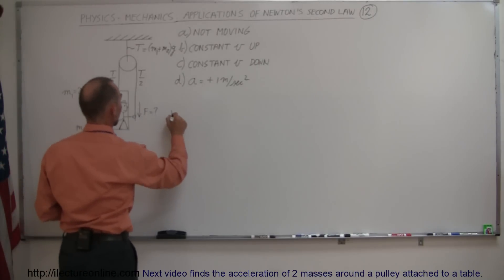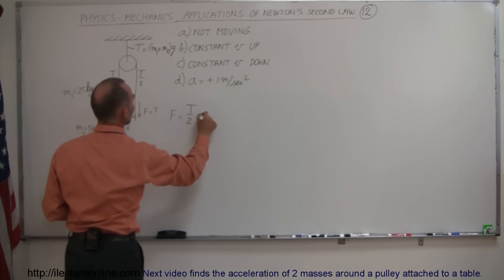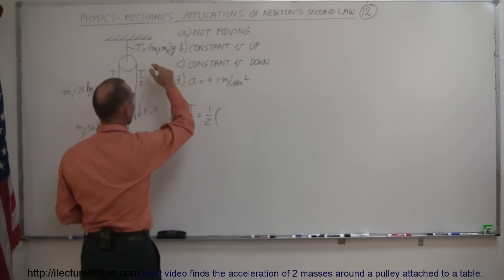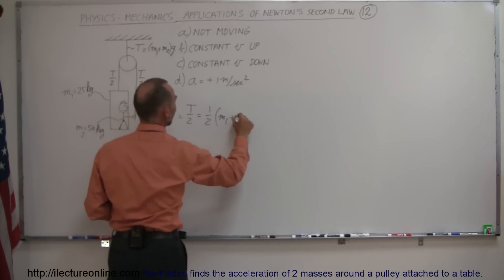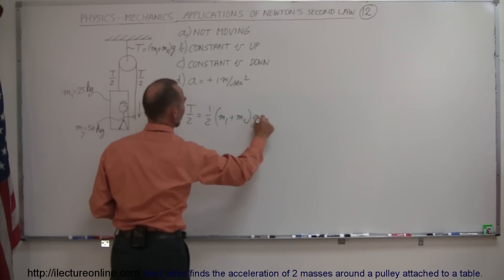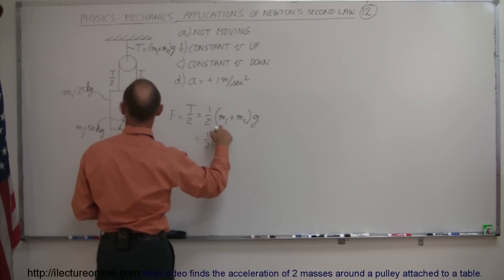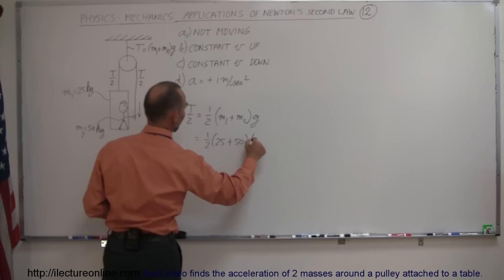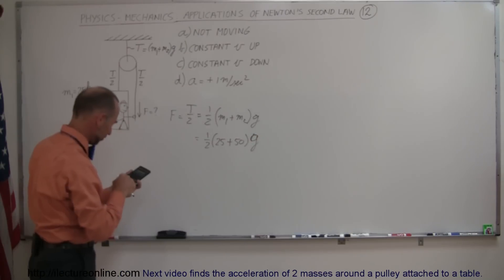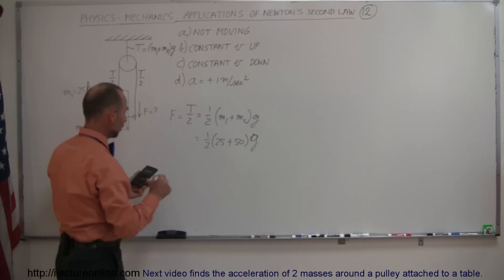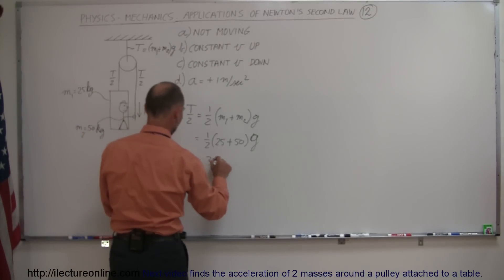So therefore the force must equal the tension of the string, which is tension over 2, which is equal to one-half times the total mass, which is m1 plus m2 times acceleration due to gravity. So this is equal to one-half times the mass 1 is 25 kilograms, mass 2 is 50 kilograms times g. So we have 75 times 9.8 divided by 2, so it takes a force of 368 newtons.